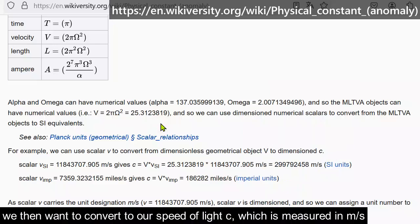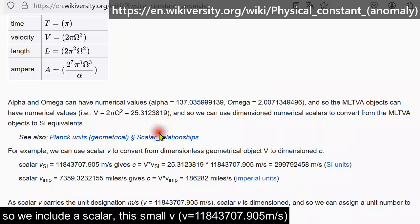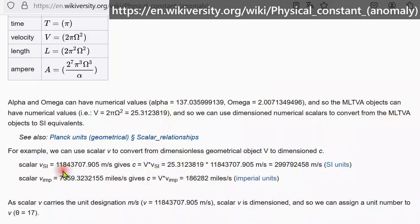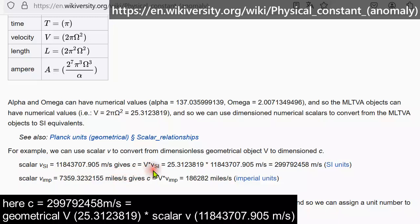We then want to convert to our speed of light c, which is measured in meters per second. So we include a scalar, this small v. Here c equals geometrical v times scalar v.